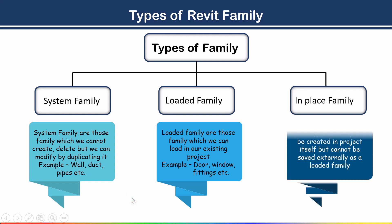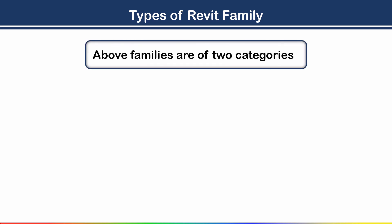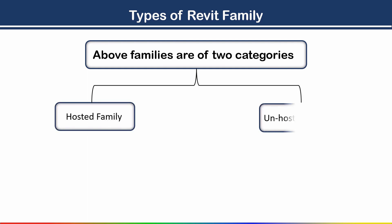The next type is the in-place family. This type of family can be created within the project itself but cannot be saved externally as a loaded family. That is called an in-place family. All three family types — system family, loaded family, and in-place family — fall into two categories: hosted family and unhosted family.